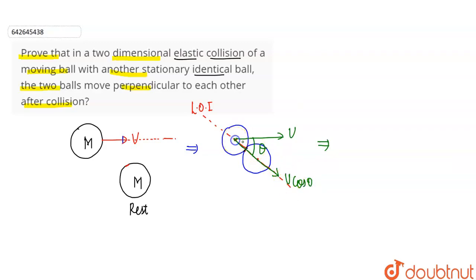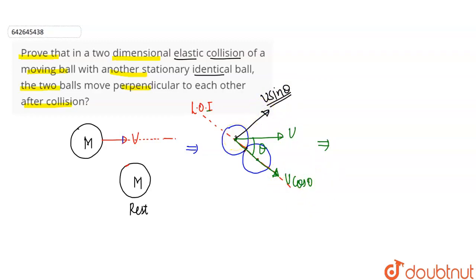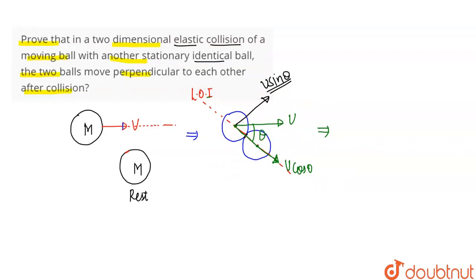So, along the line of impact, the collision velocity is v cos theta, because the collision happens along this line. The other component, perpendicular to the line of impact, is v sin theta. So from here we find that the two bodies collide with velocity v cos theta along the line of impact, and the first body moves upward with v sin theta perpendicular to the line of impact. Now, if two bodies have the same mass and elastic collision occurs, then after the collision both bodies exchange their velocities along the line of impact.